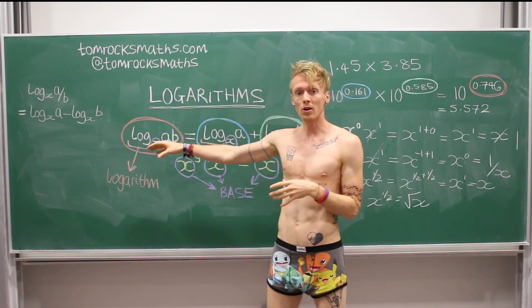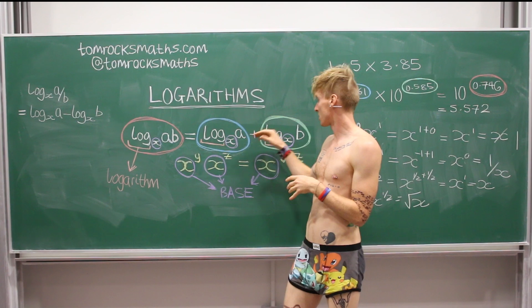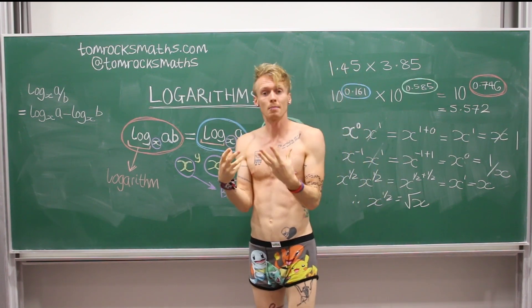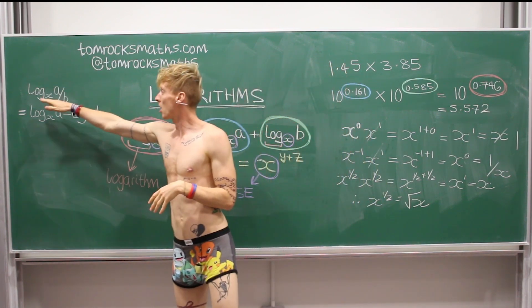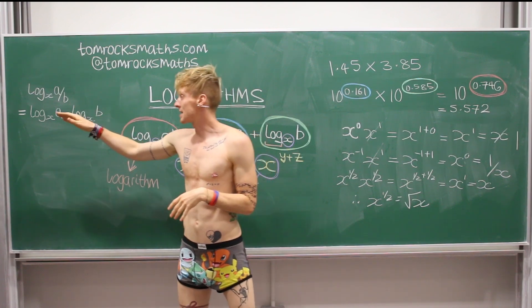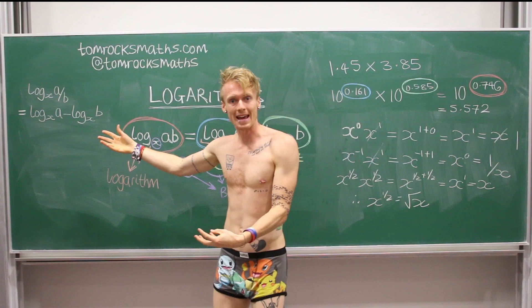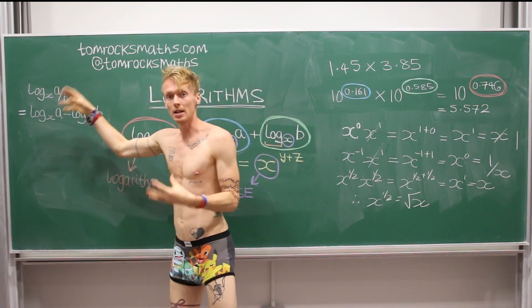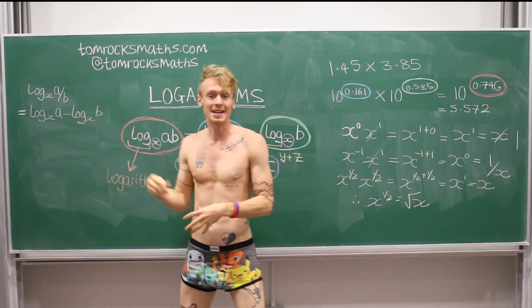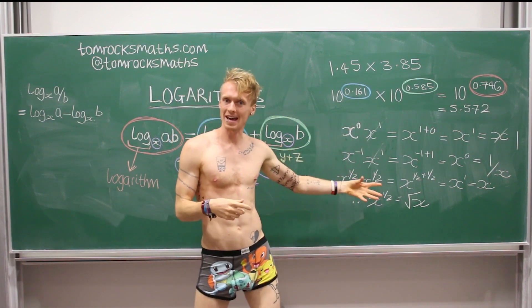So here we know that log of A times B is log A plus log B. The second property of logs is that the log of A divided by B is log of A minus log of B. And the reason you're subtracting here is because you're dividing numbers and dividing by a number is a negative power, as we've seen over here.